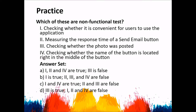Now for practice: which of these are non-functional tests? First, checking whether it is convenient for users to use the application. Second, measuring the response time of a send email button. Third, checking whether the photo was posted. Fourth, checking whether the name of the button is located right in the middle of the button. The first one is usability testing, because we are testing how easy it is to use the application. The second one — measuring response time — is performance testing. The third one — checking if the photo was posted — is actually functional testing, because we are checking the functionality of that feature.